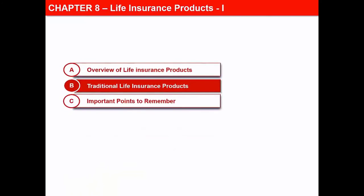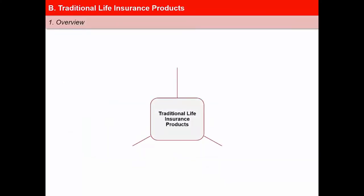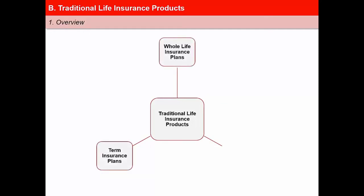In this next video of the lesson Life Insurance Products, we will learn about some of the traditional types of life insurance products. Traditional life insurance products are generally divided into three categories: term insurance plans, whole life insurance plans, and endowment insurance plans.